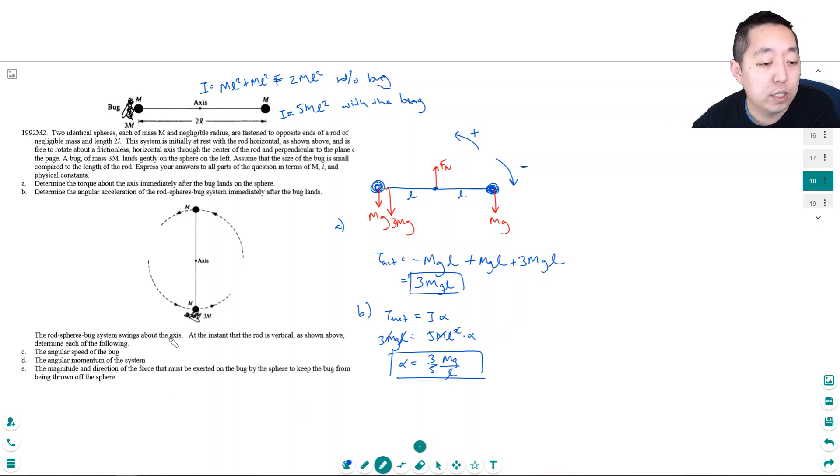Now the rod-sphere-bug system swings about the axis. At the instant the rod is vertical, as shown above, determine each of the following: the angular speed of the bug, the angular momentum of the system.